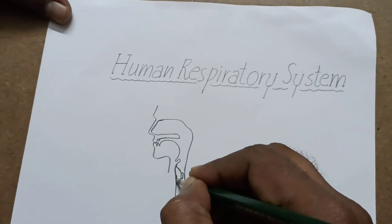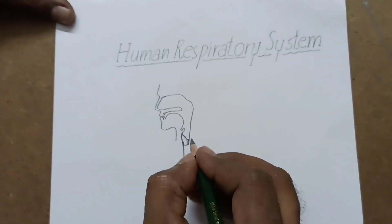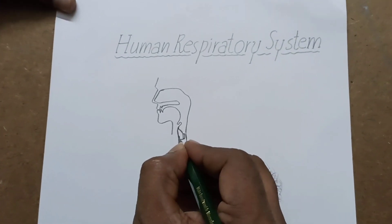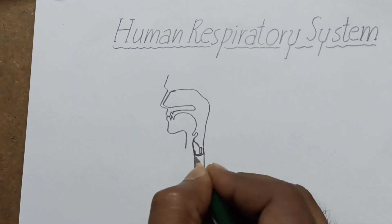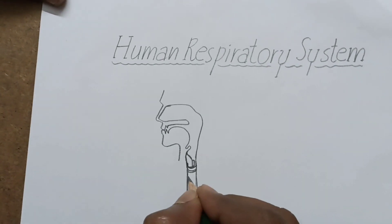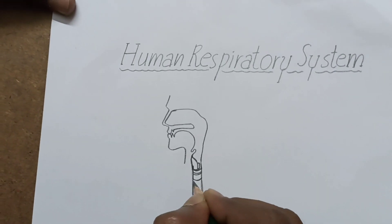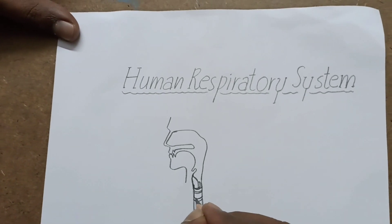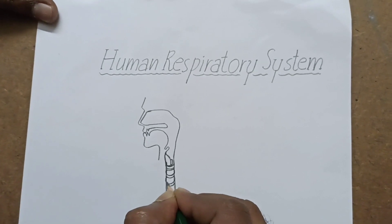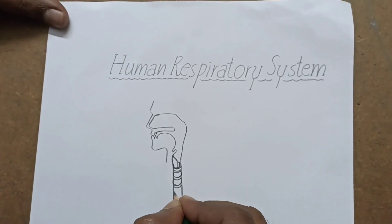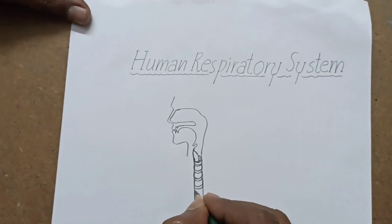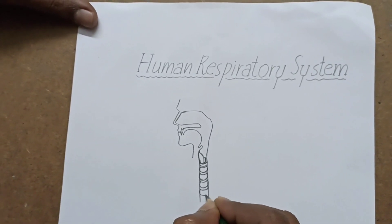Now draw the trachea like this — two straight lines. From here we have to draw some C-shaped rings like this. Draw the C-shaped rings as I am drawing the trachea now.